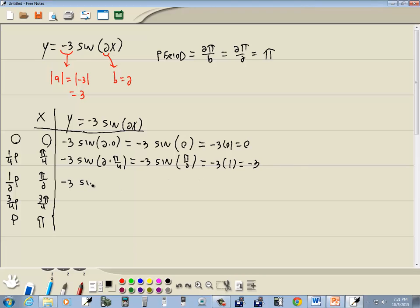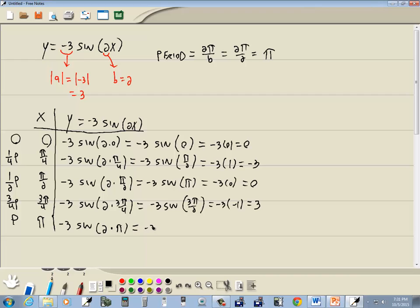And we've got negative 3 sine 2 times π over 2, which gives us negative 3 sine of π. And we've got negative 3 sine 2 times 3π over 4, which gives us negative 3 sine of 3π over 2. That gives us negative 3 times negative 1, which gives us a positive 3. And this is negative 3 sine of 2 times π, which gives us negative 3 sine of 2π, negative 3 times 0, which brings us back to 0.